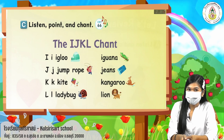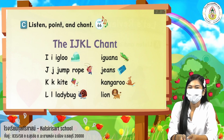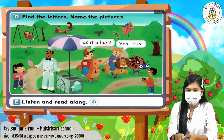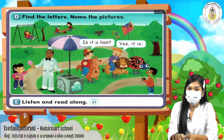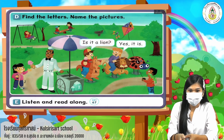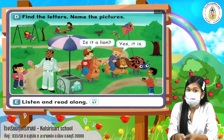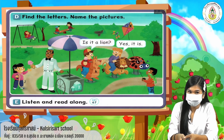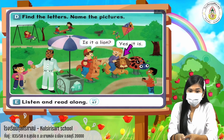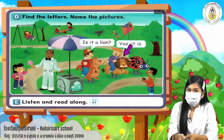All right, kids, did you like it? Great. Now let's move on — it says here: let's find the letters and name the pictures. We are going to find the letter and name the picture. First, we have here — oops — what animal is that?